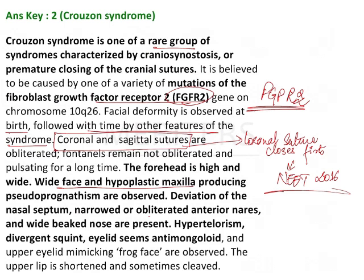Deviation of the nasal septum, narrow or obliterated anterior nose, and wide beet nose are present. Hypertelorism, divergent squint, and eyelids appearing anti-mongoloid — the upper eyelid mimicking a frog face — are observed.